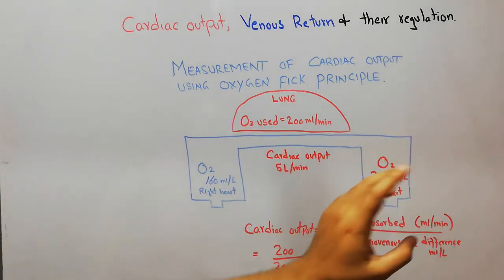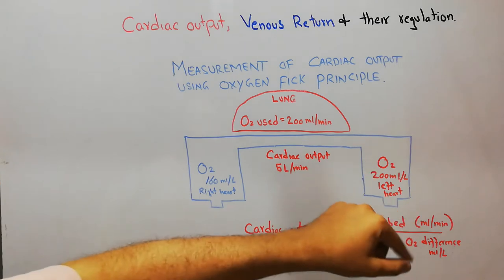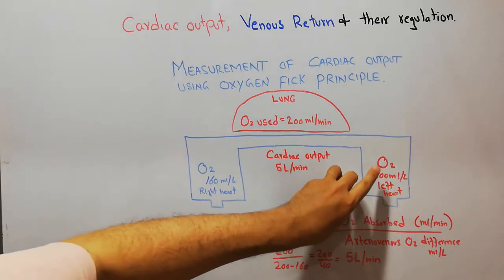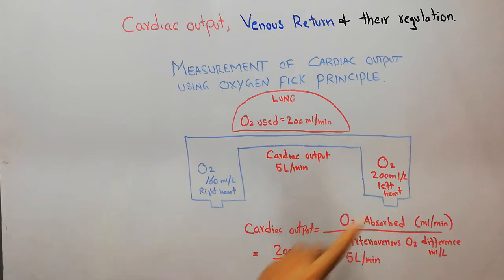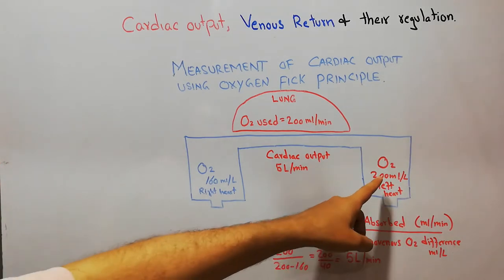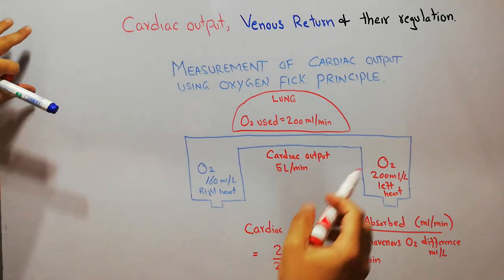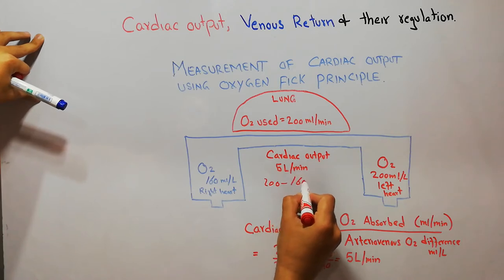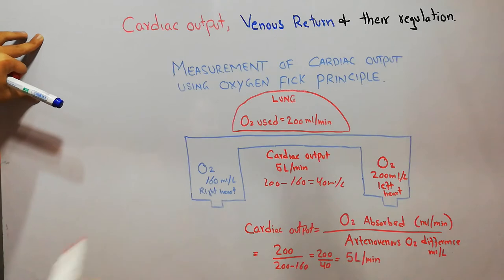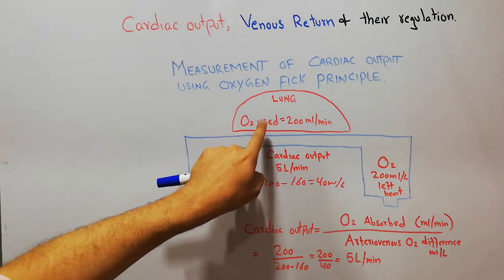When we calculate the oxygen concentration on the left side of the heart, by putting an IV line or catheter through the different arteries, we find that the oxygen concentration on the left side of the heart is 200 ml per liter of blood. So there is a difference of 40 ml per liter — 200 minus 160 is 40 ml per liter.